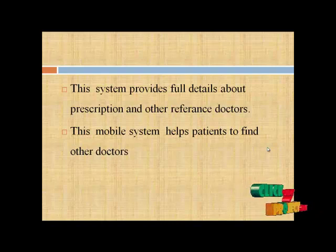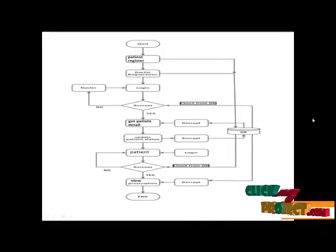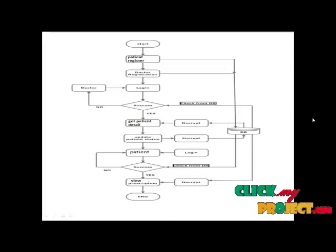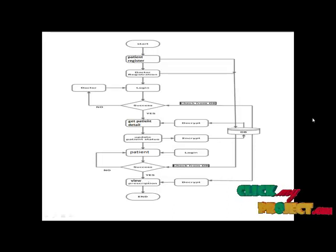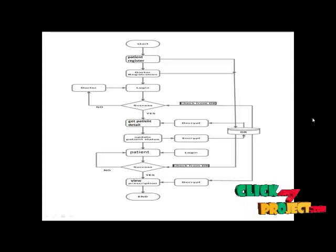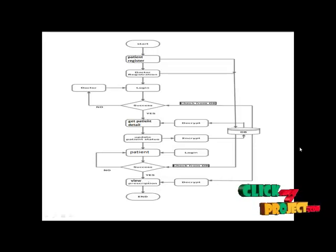Let's see the data flow diagram of our project. First, start of our application. The patient and doctor registration are done by hospital administrators. Our application only has a login panel for doctors and patients. The doctor logs into the system using their username and password given by the hospital. The password is checked from the database — if the password is incorrect, the system will not allow the doctor to access the system. If the password is correct and the doctor login information is correct, the system provides modules for updating prescriptions for patients.